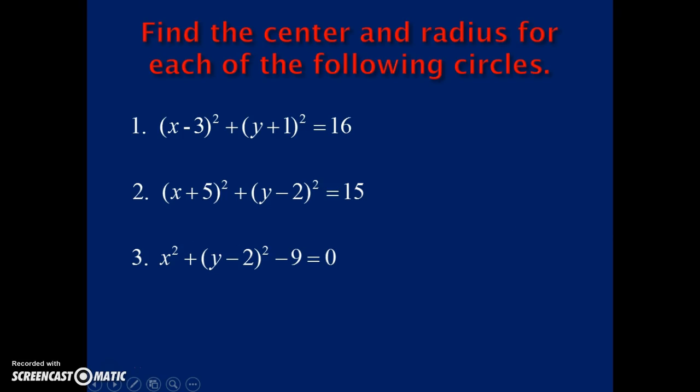This says find the center and the radius for each of the following circles. It's in the center-radius form, so it's very easy to find. We know that we have X - H and we have Y - K. When we have a plus here, we know that we are talking about Y minus a negative value. So here, the x-coordinate of the center of the circle is a positive 3 and the y-coordinate is a negative 1. And we can see R² is 16, so the radius would be 4.